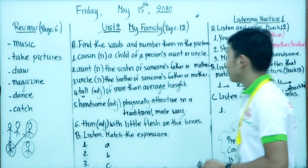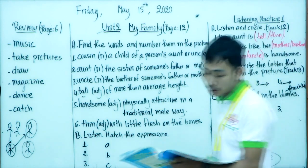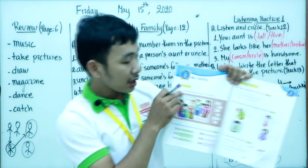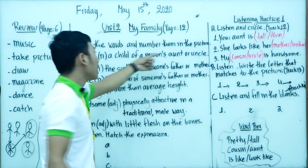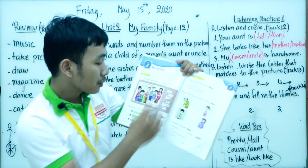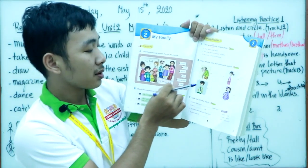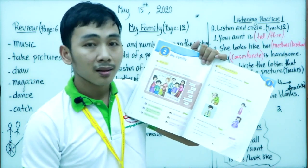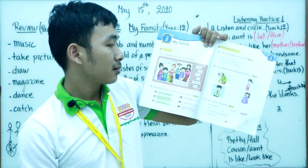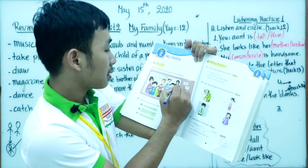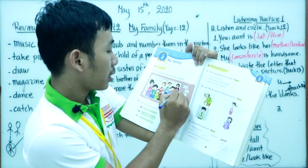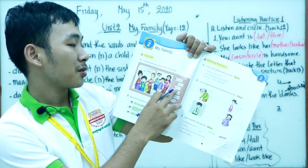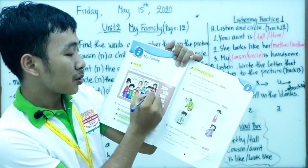Now let's move to our lesson — Section A. They want you to find the words and number them in the picture. Number 1 is 'cousins.' Where is the cousin in the picture? You can put number 1 on the person in the middle. Number 2 is 'aunt' — you can see the aunt here. Number 3 is 'uncle' — where is the uncle? You can write number 3 there.